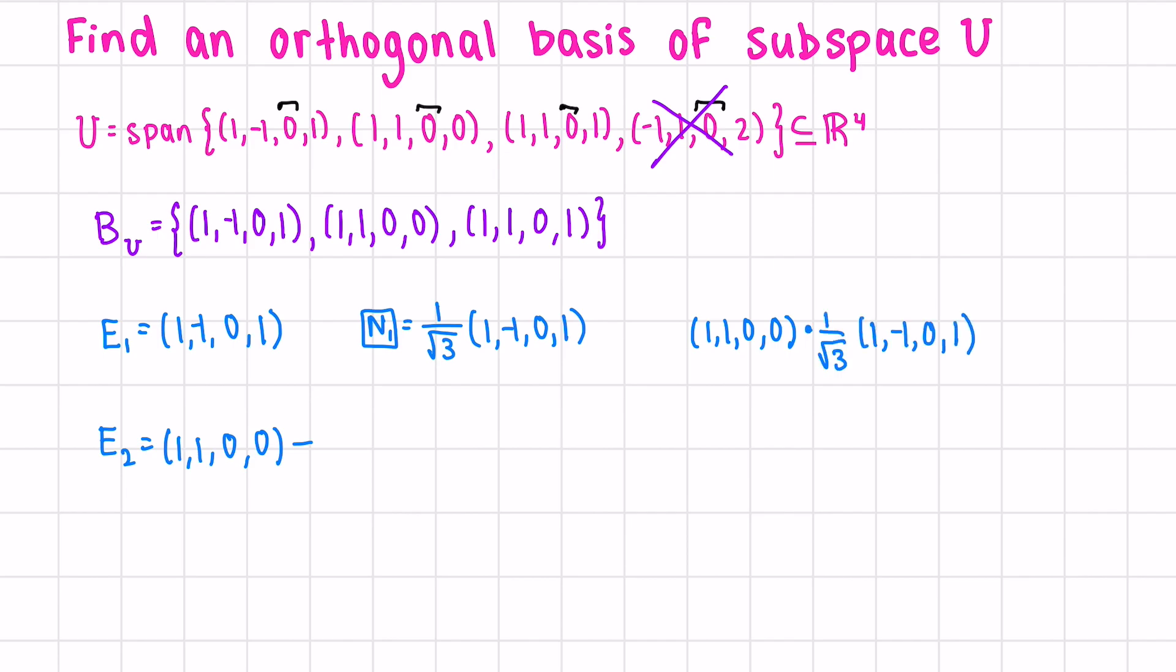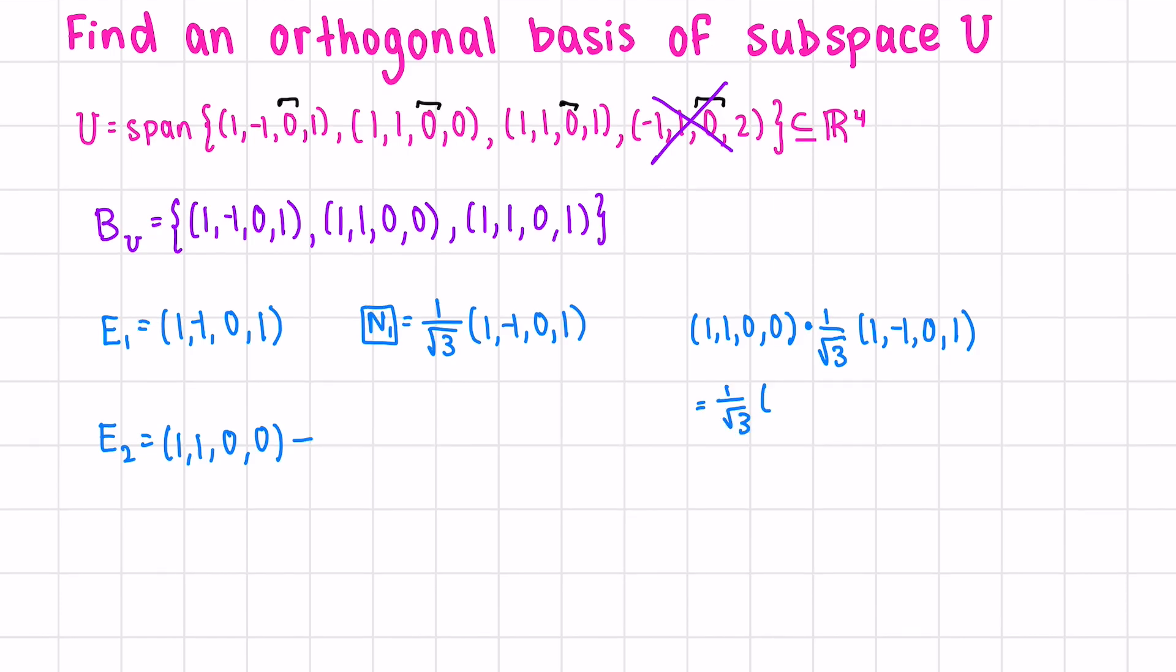Again, this is just the portion that the first vector has already covered. We can pull out the 1 over root 3. Then we get 1 minus 1, which is 0. These first two vectors that we picked are actually already orthogonal, which is why we get 0 times n_1. You can see if we take the dot product of these two vectors, we already get 0. We can say that n_2, let's just normalize e_2, would be 1 over root 2 times 1, 1, 0, 0.